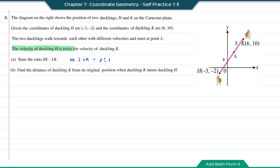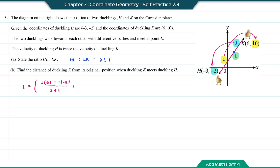Question B: find the distance of duckling K from its original position when duckling K meets duckling H. Here we want to find the distance from point K to point L. First we are going to find the coordinate of point L. It will be: (2 times 6 plus 1 times negative 3) divided by the total ratio 2 plus 1, and (2 times 10 plus 1 times negative 2) divided by 2 plus 1.